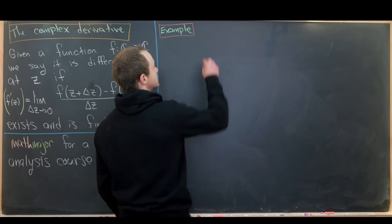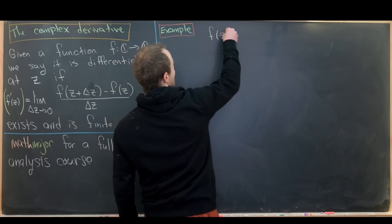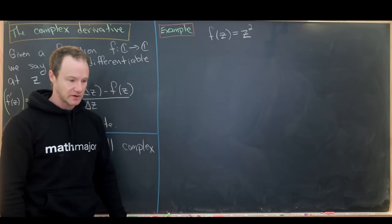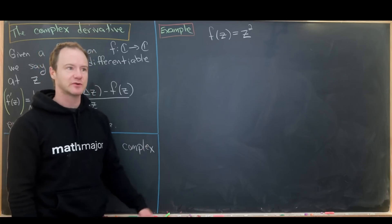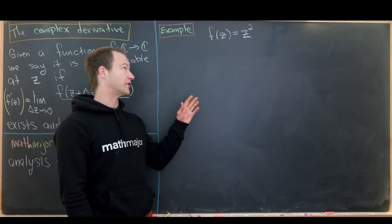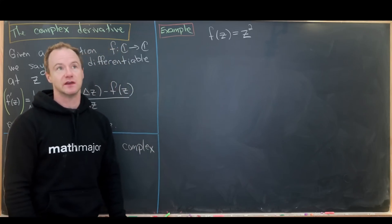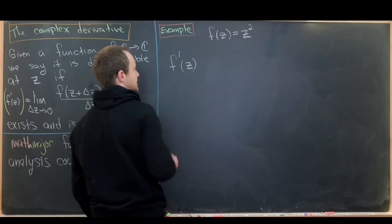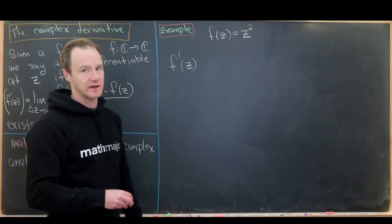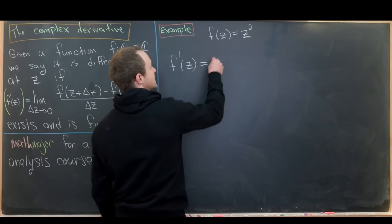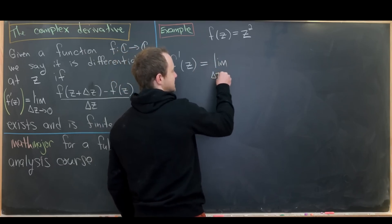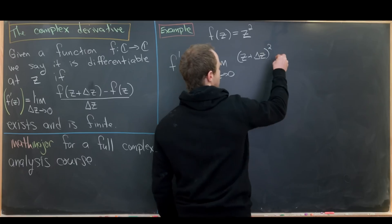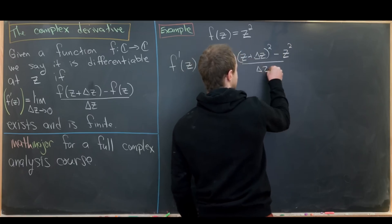Let's look at a couple of examples. The first example is f(z) = z squared. It's a fairly simple function, so we should expect it to be differentiable, and if anything is right with the world, the derivative should have the same form as in real-variable calculus. So we'll try to calculate f prime of z — it's a bit of a cheat to write f prime now since we don't yet know the limit exists, but we'll be okay. This is the limit as delta z approaches zero of [(z + delta z)² − z²] / delta z.